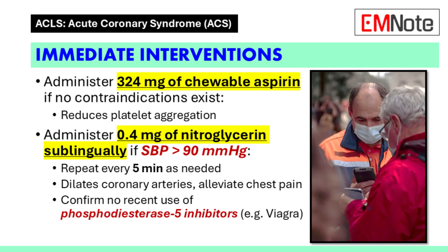If the patient's systolic blood pressure remains above 90 mmHg, provide 0.4 mg of nitroglycerin sublingually. This dose can be repeated every 5 minutes as needed. Nitroglycerin helps dilate coronary arteries and alleviate chest pain. Before administering nitroglycerin, confirm that the patient has not recently used a phosphodiesterase 5 inhibitor.